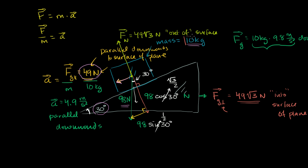In the last video, we had a 10 kilogram mass sitting on top of an inclined plane with a 30 degree angle. In order to figure out what would happen to this block, we broke down the force of gravity on this block into the components that are parallel to the surface of the plane and perpendicular to the surface of the plane. For the perpendicular component, we got 49 times the square root of 3 newtons downwards — 98 times this quantity over here downwards.